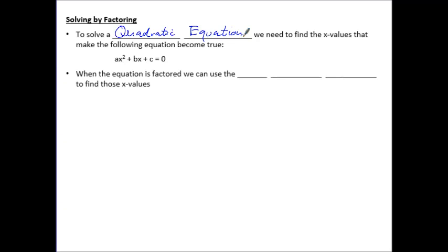We could plug in all sorts of numbers for x and see which ones turn the left side of the equation to zero, and those would be the values that make the equation true. But it's way easier to do that when the equation is factored, because then we can use the zero product property to find our x values.